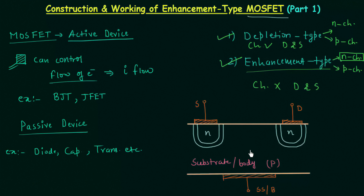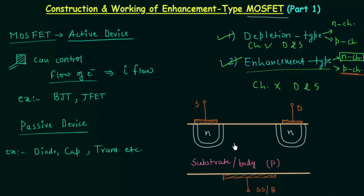Now we will talk about the gate terminal, but first let's make one thing clear. When the substrate or body is of P type material, then source and drain are N type materials. When the substrate or body is of N type material, then source and drain are made of P type material. In case of P channel enhancement type MOSFET, the substrate is of N type and source and drains are of P type.